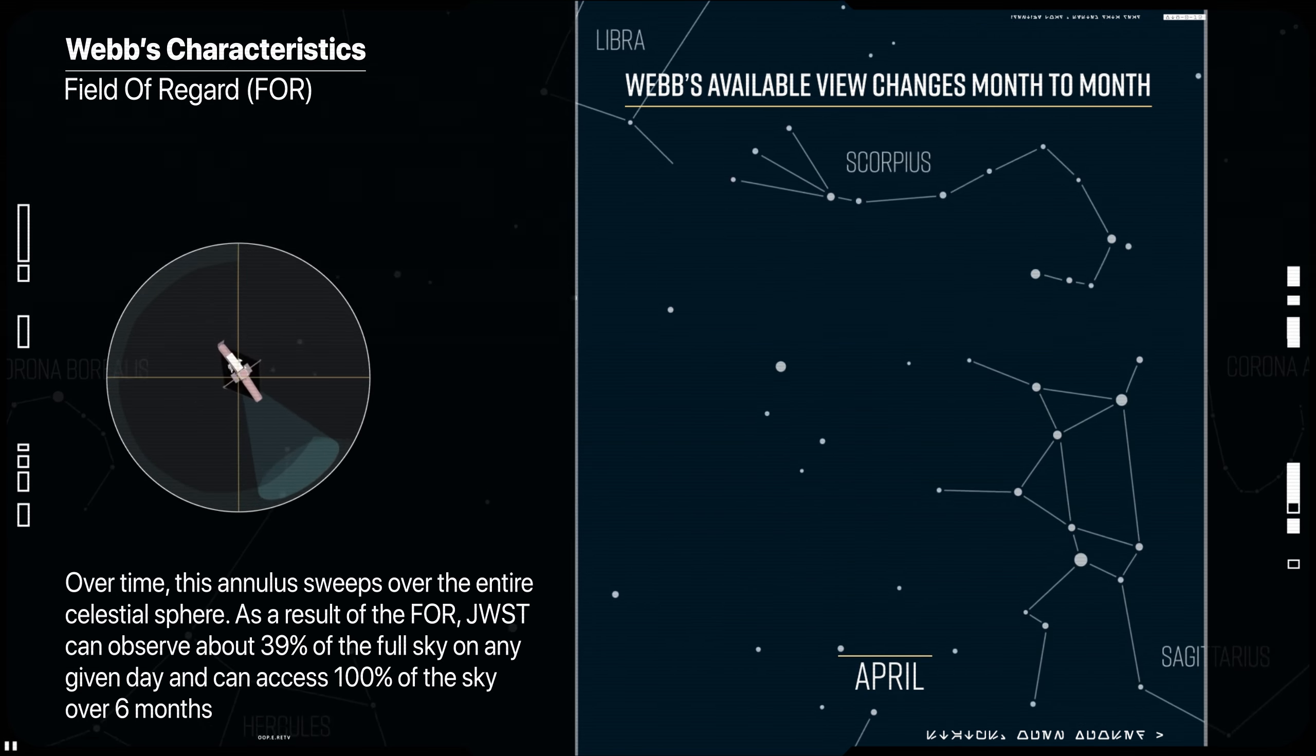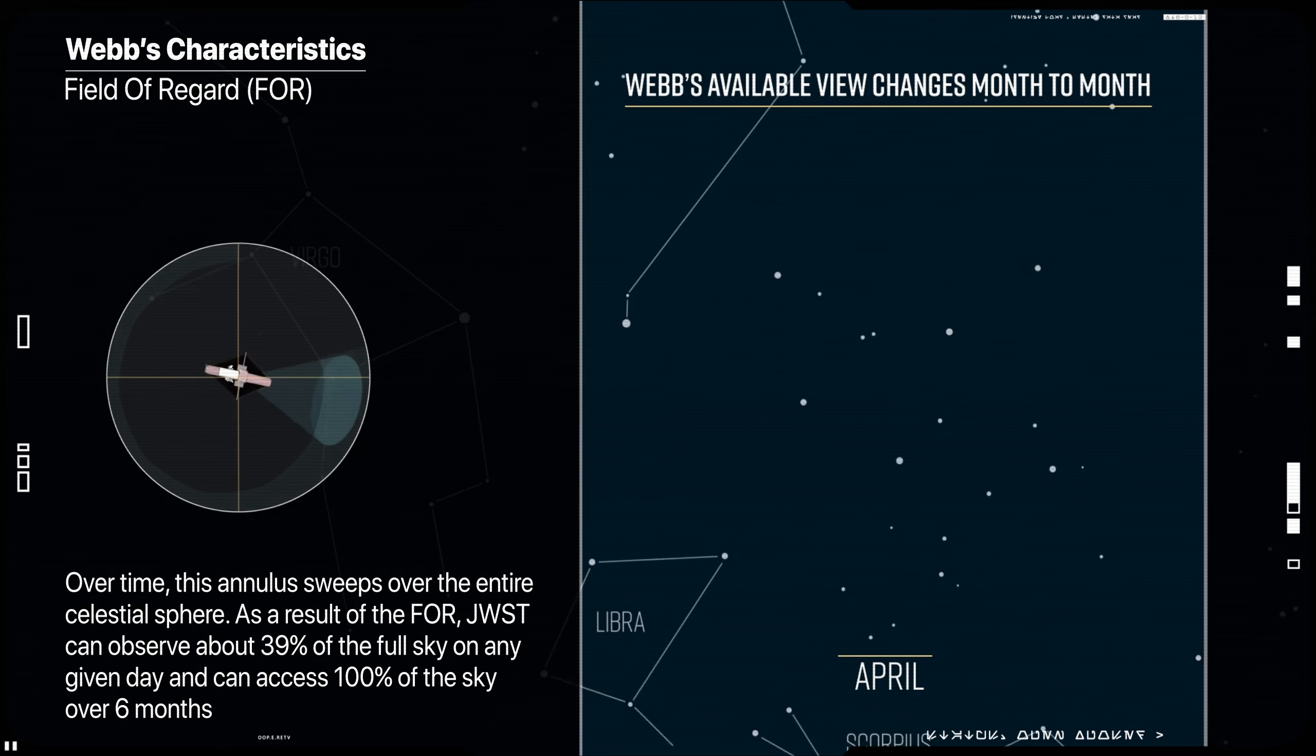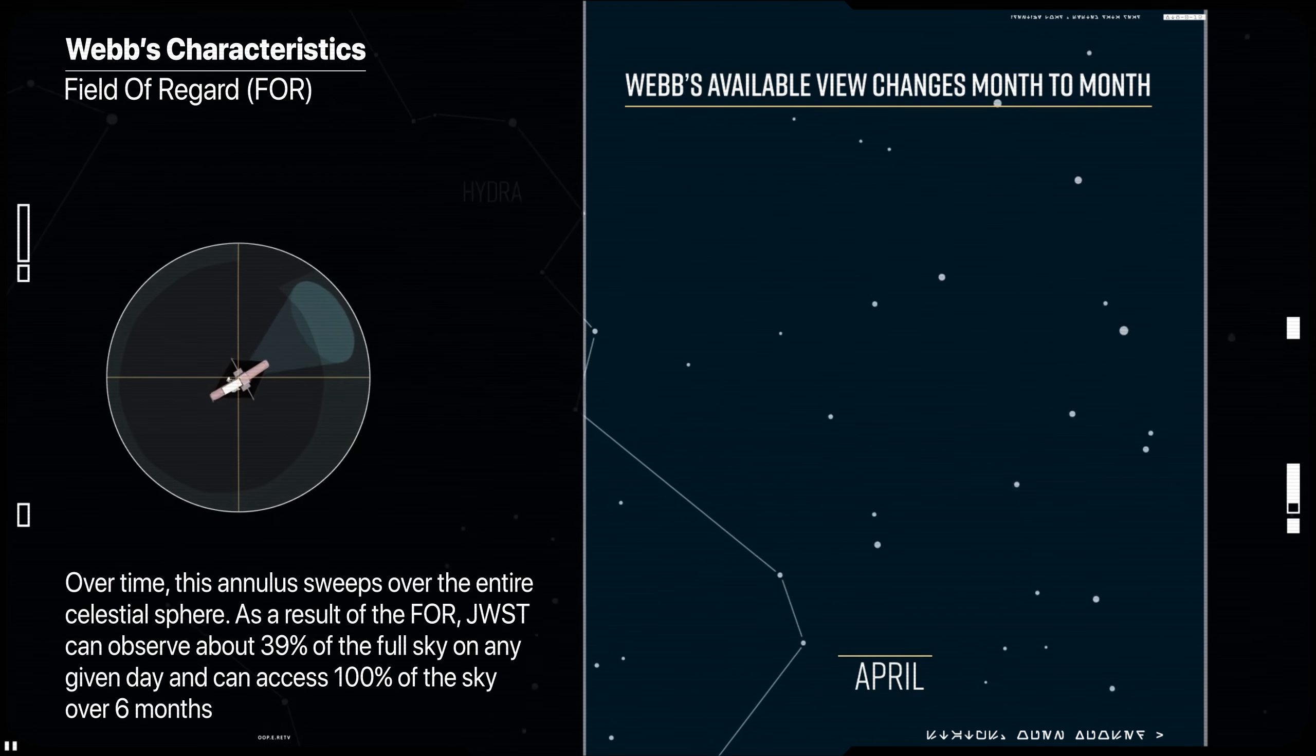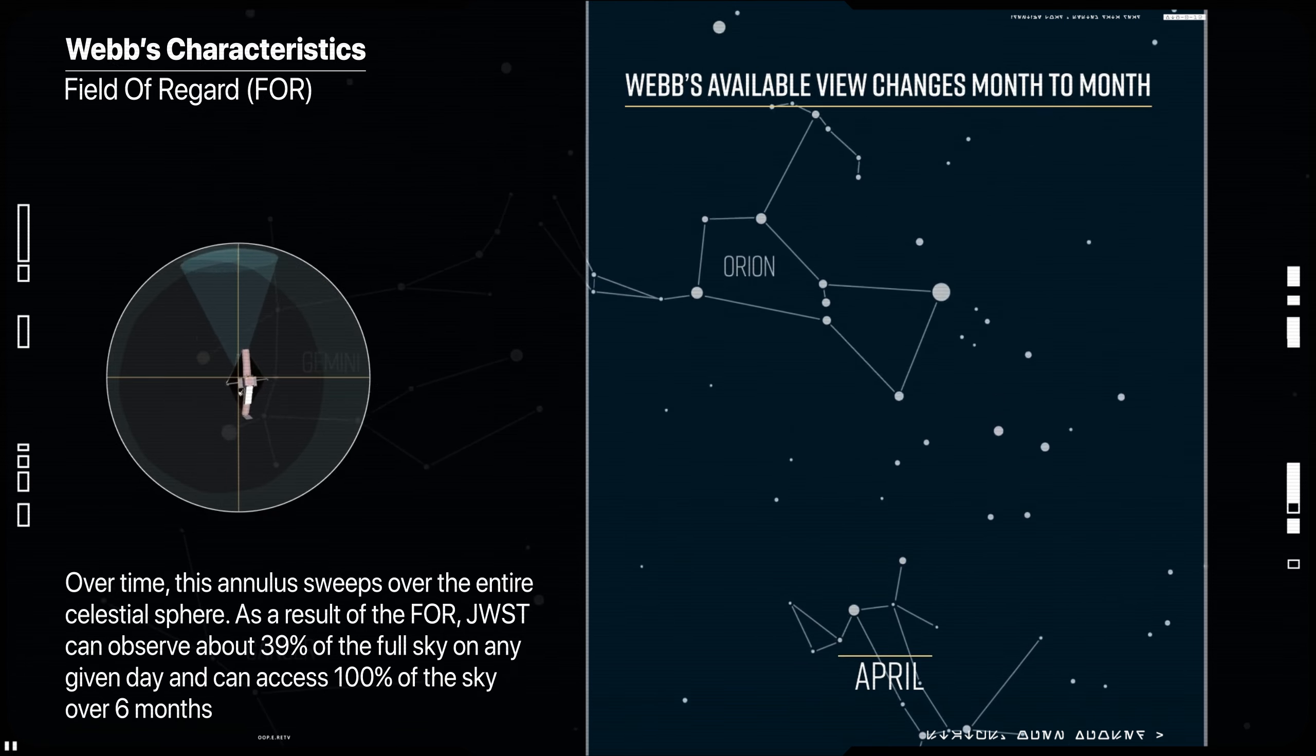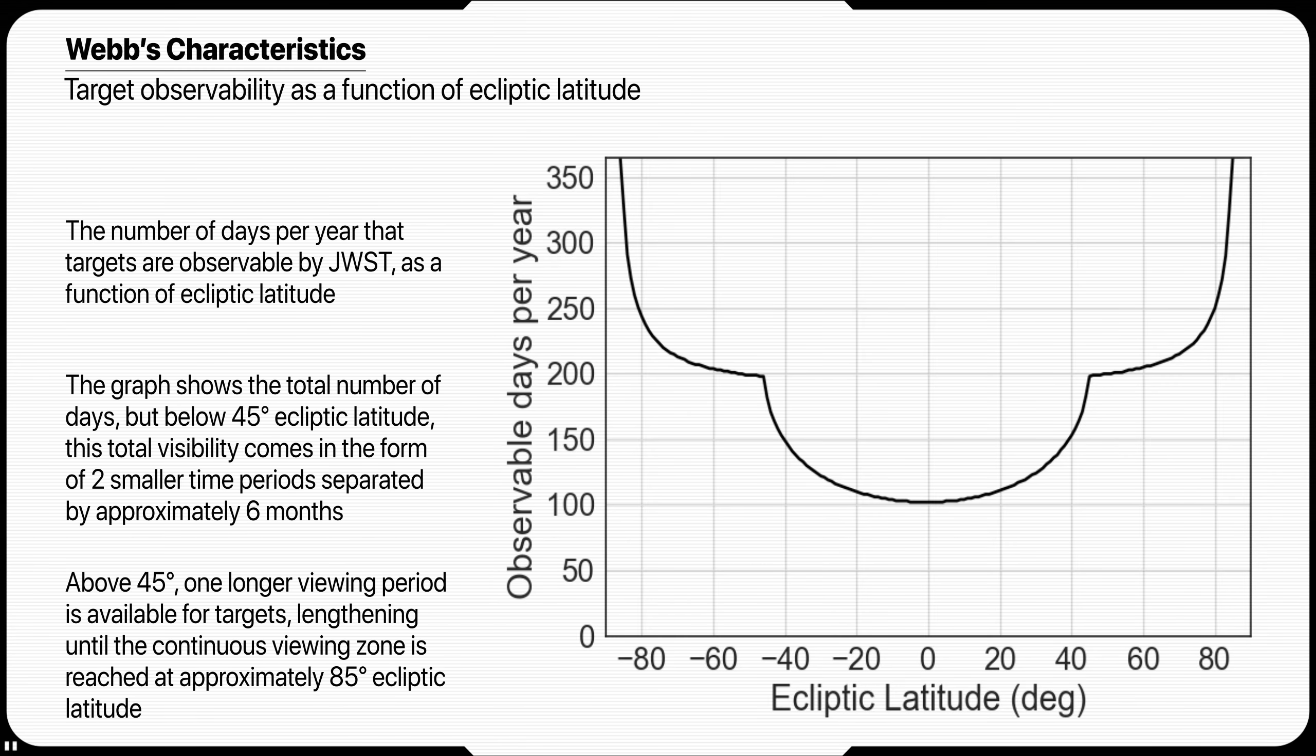Observability with James Webb is very dependent on a given target's ecliptic latitude. Below 45 degrees ecliptic latitude, James Webb can observe targets in two visibility windows per year centered about 6 months apart, with each window lasting at least 50 days.